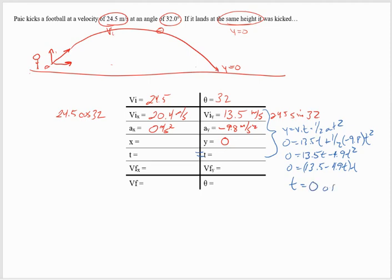One of those is T equals zero. Well, I already know the ball is at displacement zero at the beginning, so I'm not interested in that one. I want the other one. If I subtract 13.5 over, divide by negative 4.9, I end up with a time of 2.76 seconds.